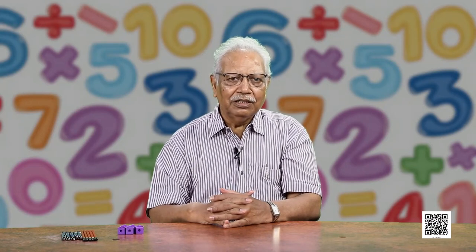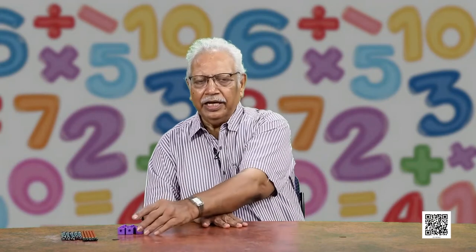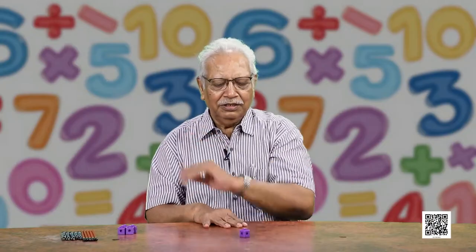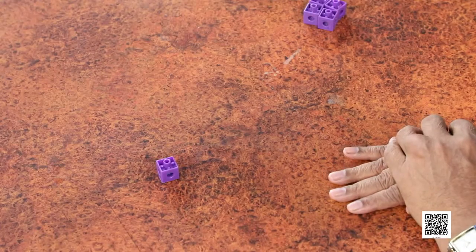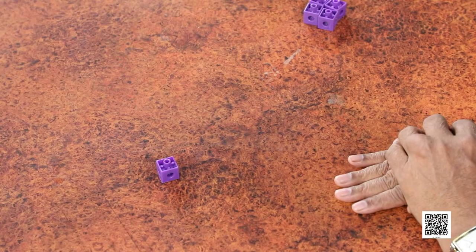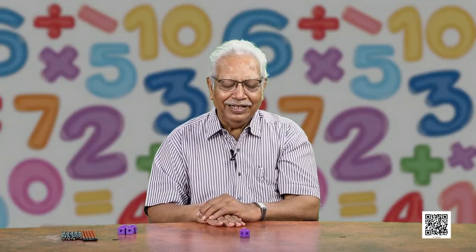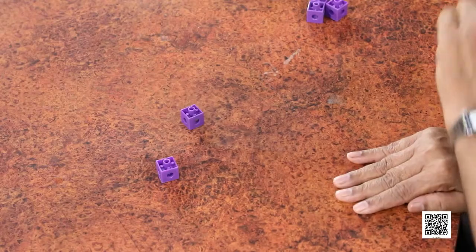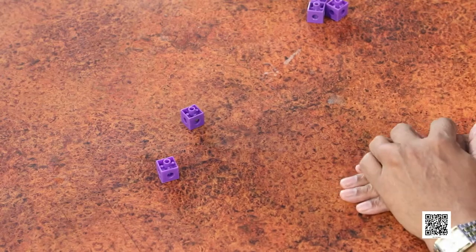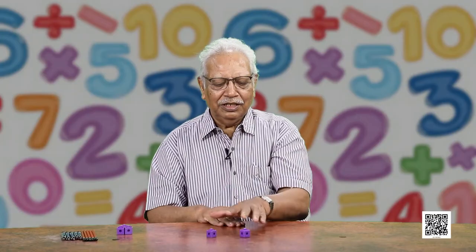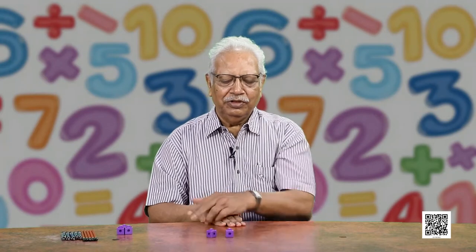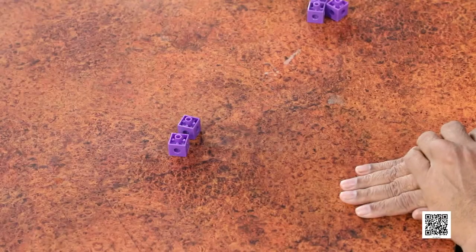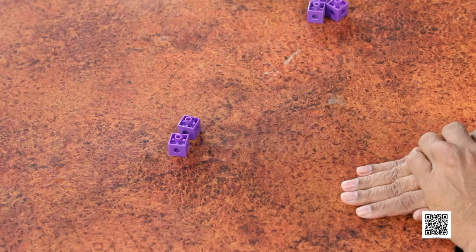Let us start. We can take any small object — for example, how many of these plastic cubes? One and one more plastic cube. Now, how many are these? You will say one and this one make 2. They add to make 2.